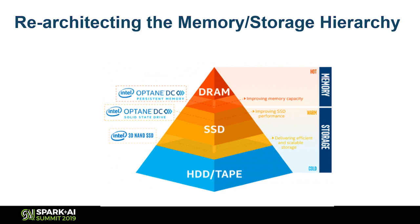Intel Optane DC Persistent Memory slots in between those two tiers — between cold block storage and the warm/hot DRAM tier. Because it combines the properties of both memory and storage, it is both non-volatile, meaning it retains its contents across power failures, and very fast — just a tiny bit slower than DRAM — with the same access characteristics as DRAM. You can use normal load/store semantics to access persistent memory.